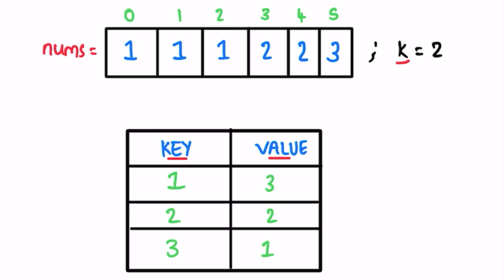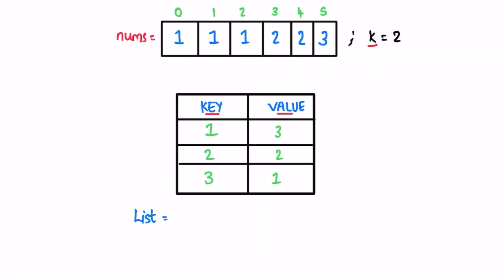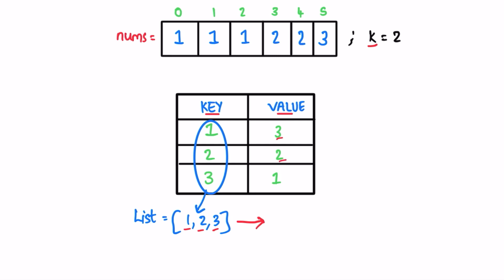We need to pick the top two frequent elements. The most frequent is 1 appearing 3 times, and the second most frequent is 2 appearing 2 times. To find this, we create a list containing only the keys from the map — so the list will contain 1, 2, and 3. We then sort this list using a comparator that compares elements based on their frequency values from the map, sorting from maximum to minimum.